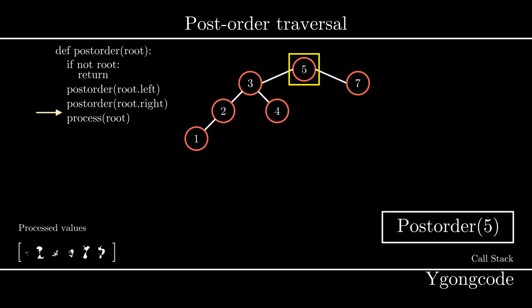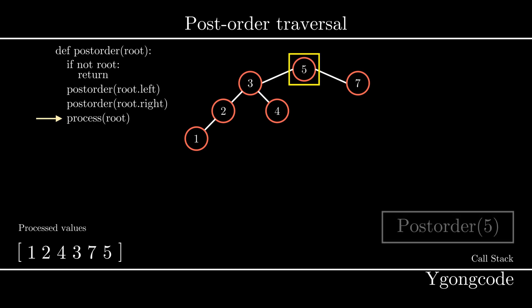We have finished traversing both subtrees of post-order(5), so we process its value and pop it off the stack. Since the call stack is now empty and all nodes have been traversed, our traversal is completed.